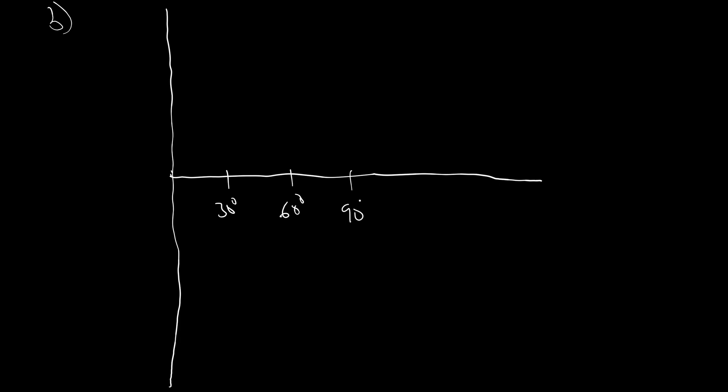This will be our axis — this would be our y-axis. Since we don't have negative values of x, we can ignore the negative x side, so this would be our x-axis. We are using 2 centimeters to 30 degrees on the x-axis, so we have 30°, 60°, 90°, 120°, and 150°. On the y-axis, using 2 centimeters to 2 units, we have 2, 4, 6, 8, and 10.